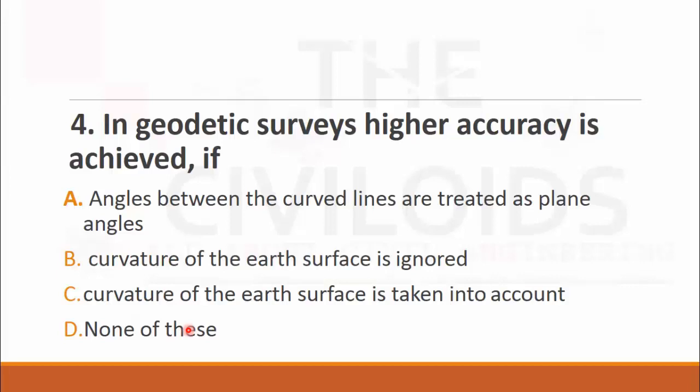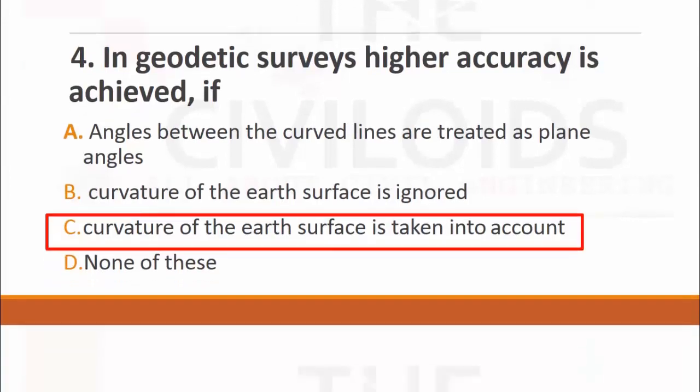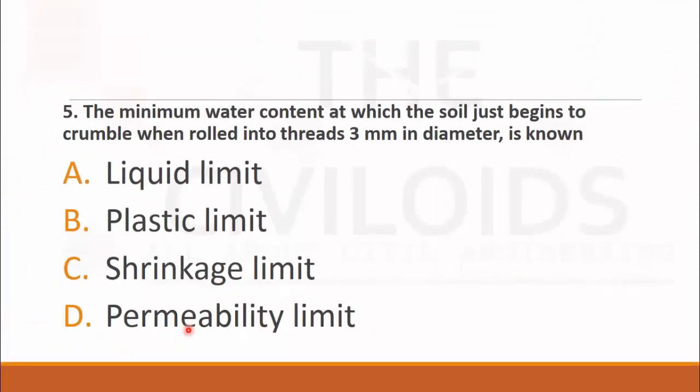MCQ number five: The minimum water content at which the soil just begins to crumble when rolled into threads three millimeter in diameter is known as. The choices are: A. liquid limit, B. plastic limit, C. shrinkage limit, and D. permeability limit. The choice is B. plastic limit.